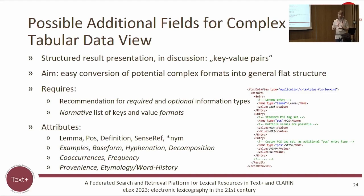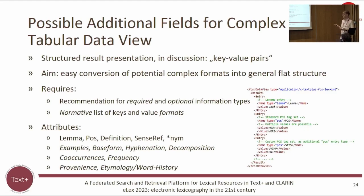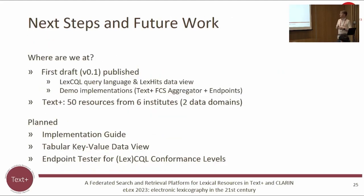This still requires recommendations on which information types are required or optional, and normative lists of which keys are used, what field types there are, and the ranges of options — for example, if you have POS, you may want to use UD17 tag sets or custom tag sets. Standard attributes in lexical resources may also include examples of lemma usage in sentences, base forms, hyphenation, decomposition for German compound nouns, co-occurrence and frequency information, provenance, word history, and etymology.